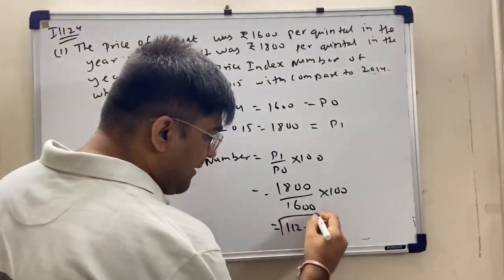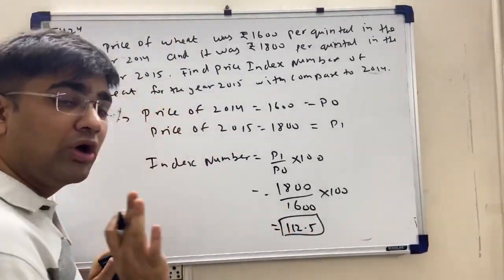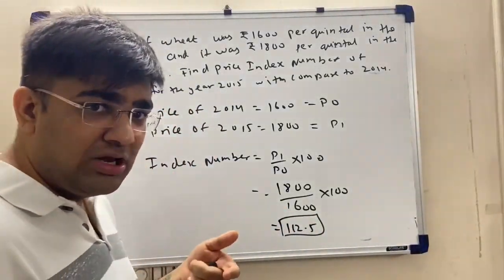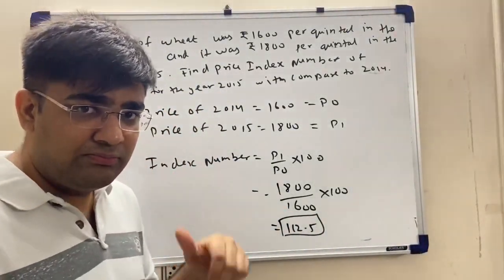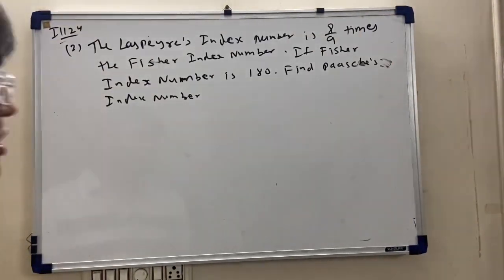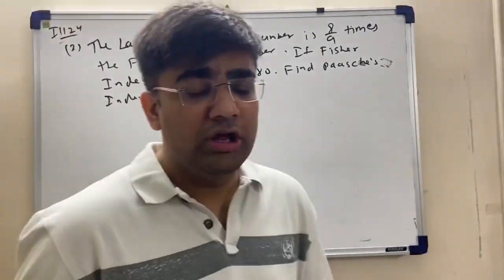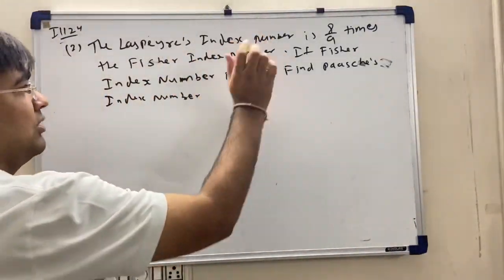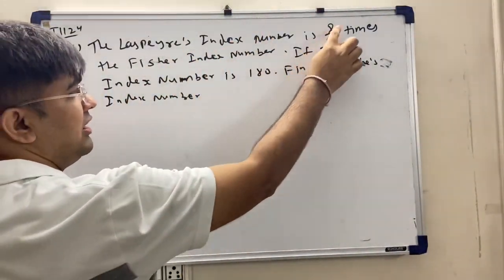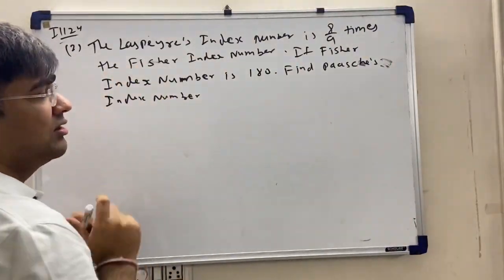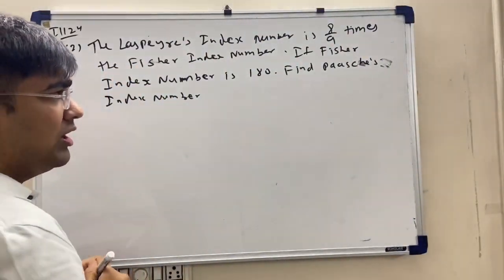This sum is complete. Now the next sum: the Laspeyre index number is 8 upon 9 times of the Fisher index number.